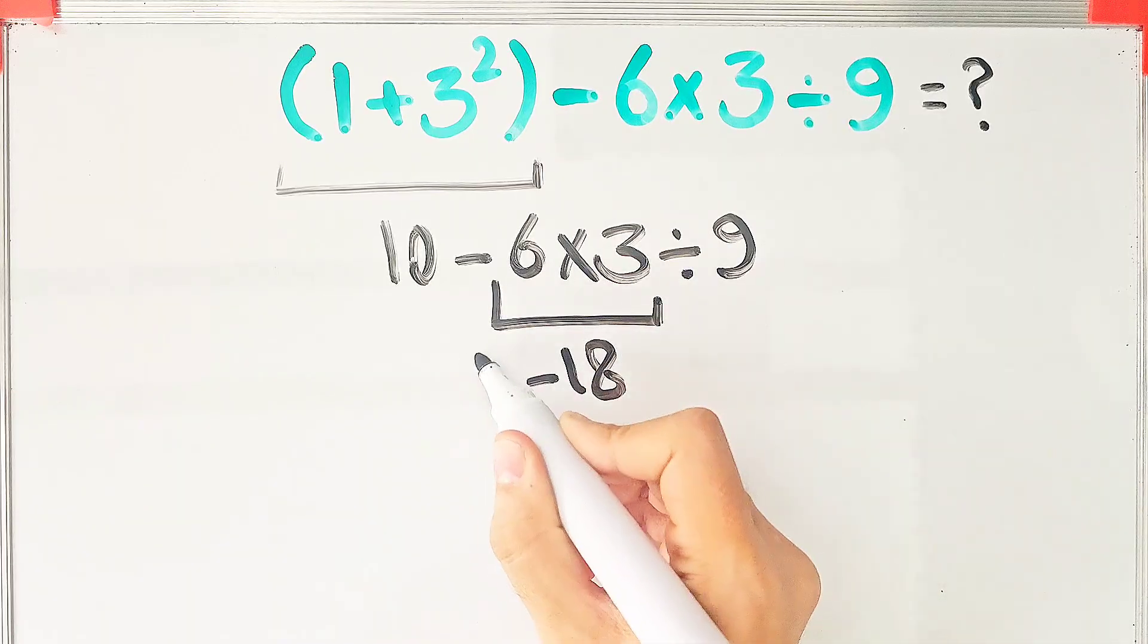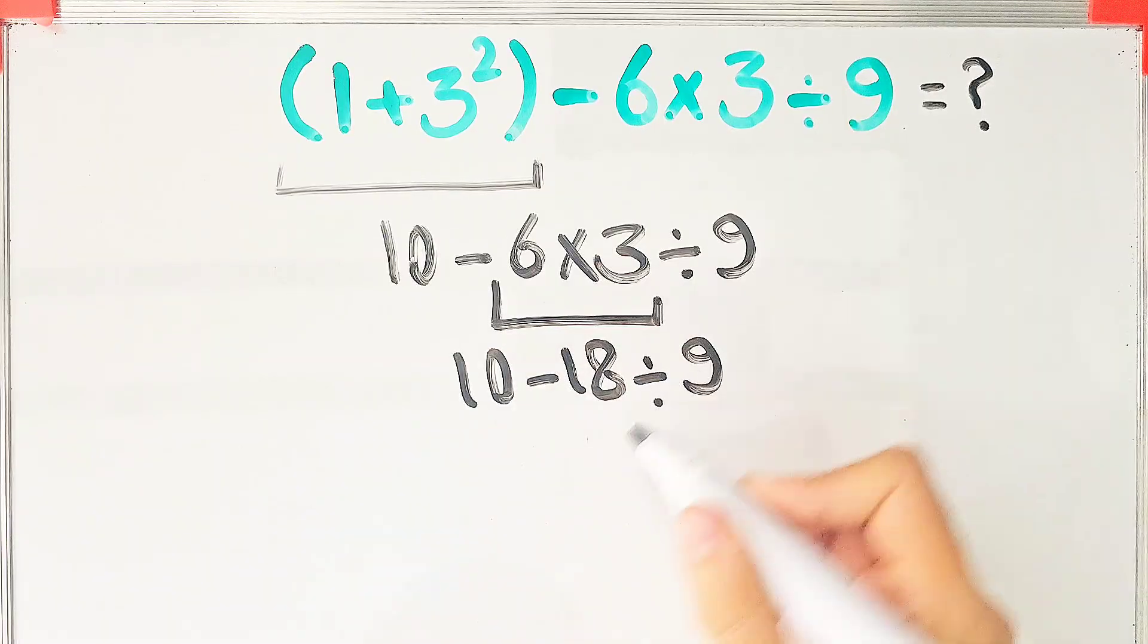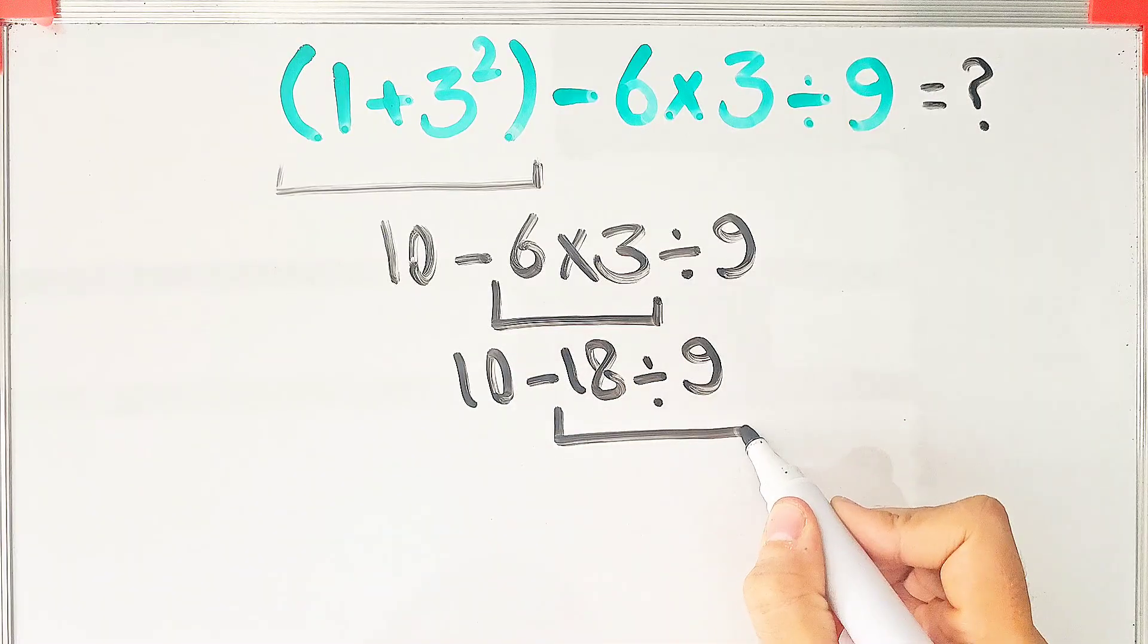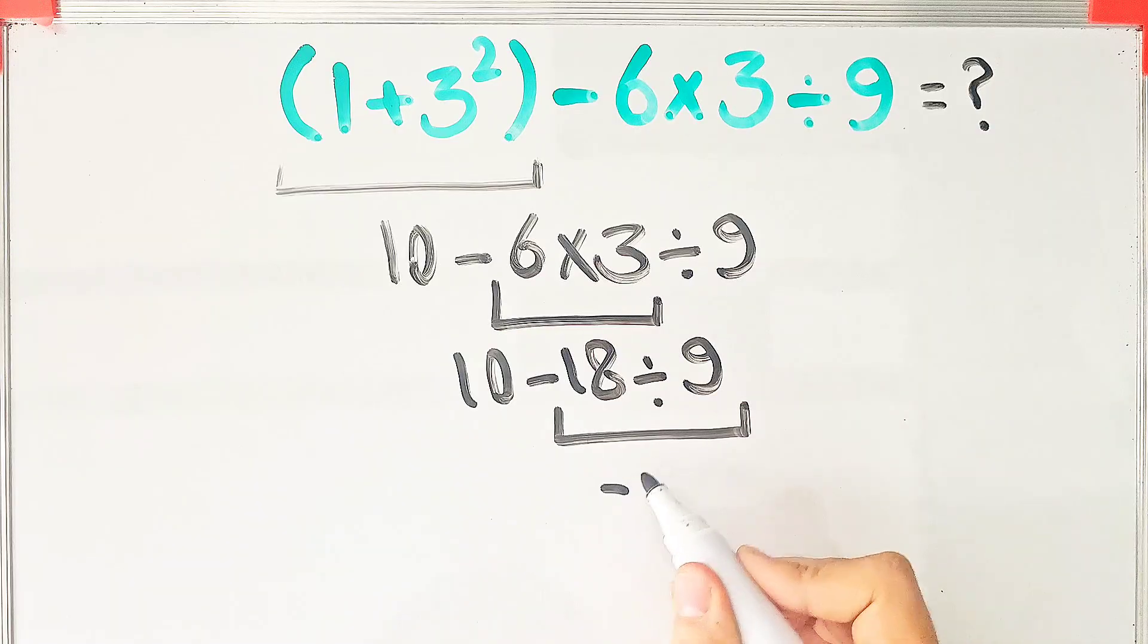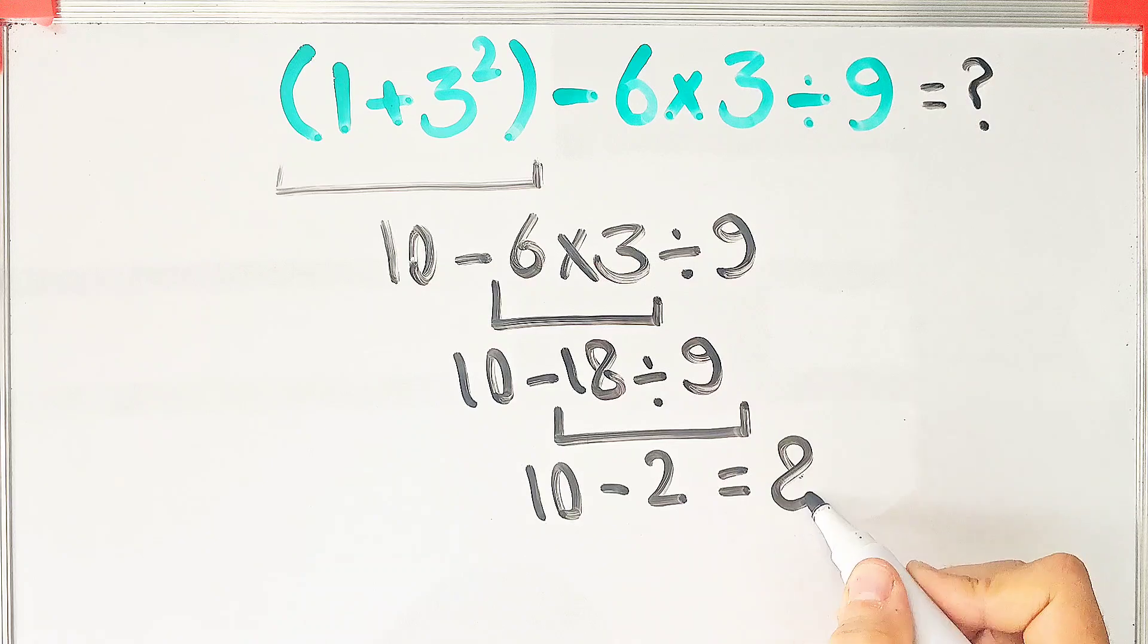Now we have 10 minus 18 divided by 9. Now we do this division. Negative 18 divided by 9 equals negative 2. And 10 minus 2 equals 8. The final answer of this question equals 8.